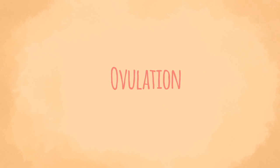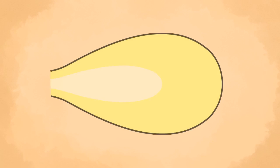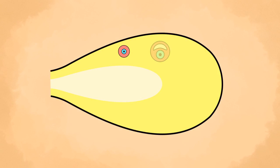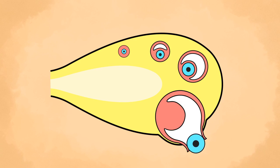Ovulation: The shedding of the ovum from the ovary is called ovulation. The ovarian follicle is at first very small compared to the thickness of the cortex of the ovary. As it enlarges, it becomes so big that it not only reaches the surface of the ovary but also forms a bulging. Ultimately, the follicle ruptures and the ovum is shed from the ovary.